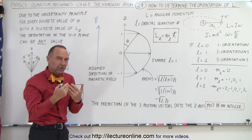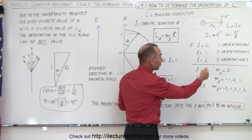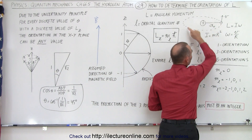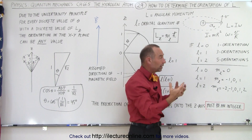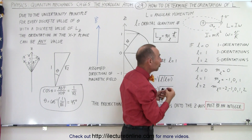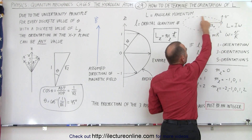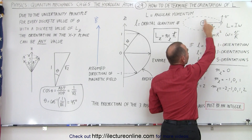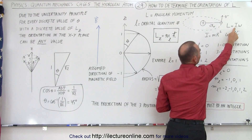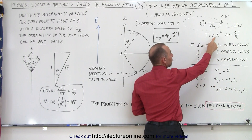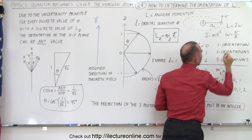First of all, we need to go back to the classical understanding of what angular momentum is. Angular momentum has to do with an object, such as an electron, that goes around a circle. In this case we're dealing with an electron inside a hydrogen atom. That electron has mass, and therefore as it goes around the center of the atom, it has angular momentum, which is defined by I times omega. I is the moment of inertia, which is the mass times the radius squared, and omega is the angular velocity, which is V over R.